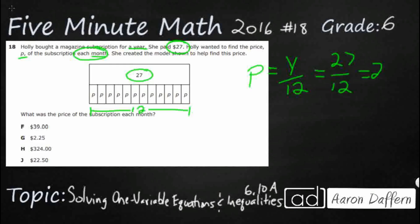If you want to do it more traditionally, you can write it horizontally. But remember in 6th grade we are using fractional notation. This improper fraction of 27 twelfths is the exact same thing as 27 divided by 12 — it is a different way to write division. So that is going to give us our answer: 27 divided by 12.